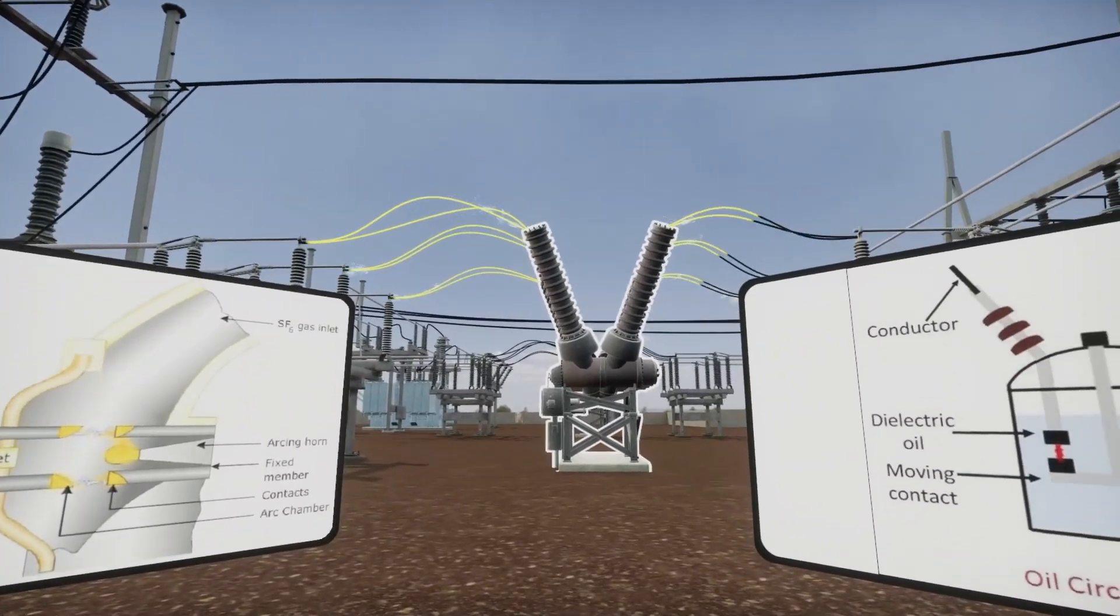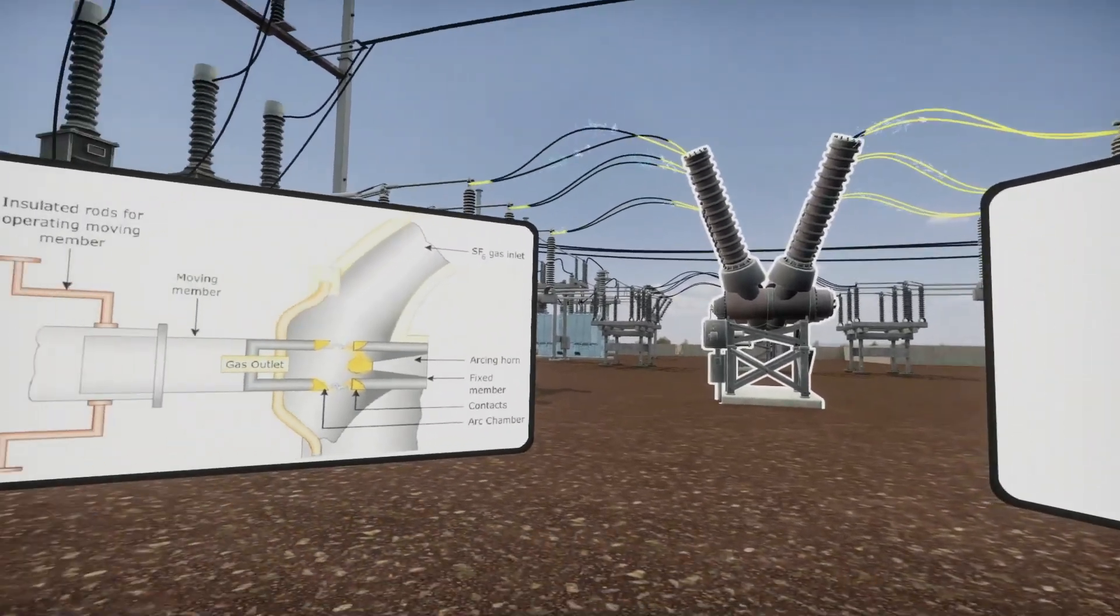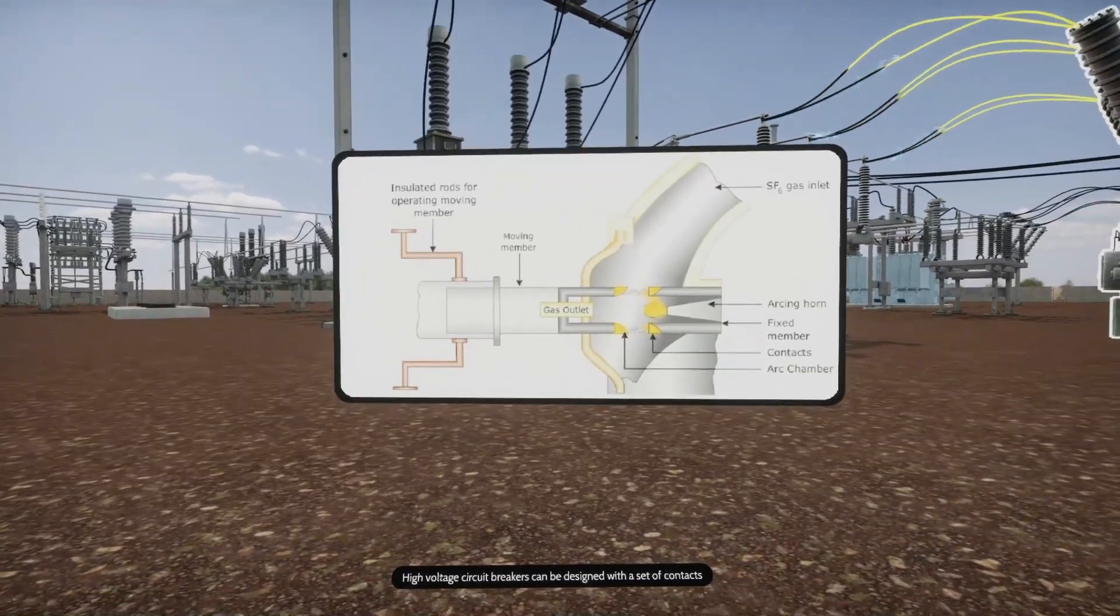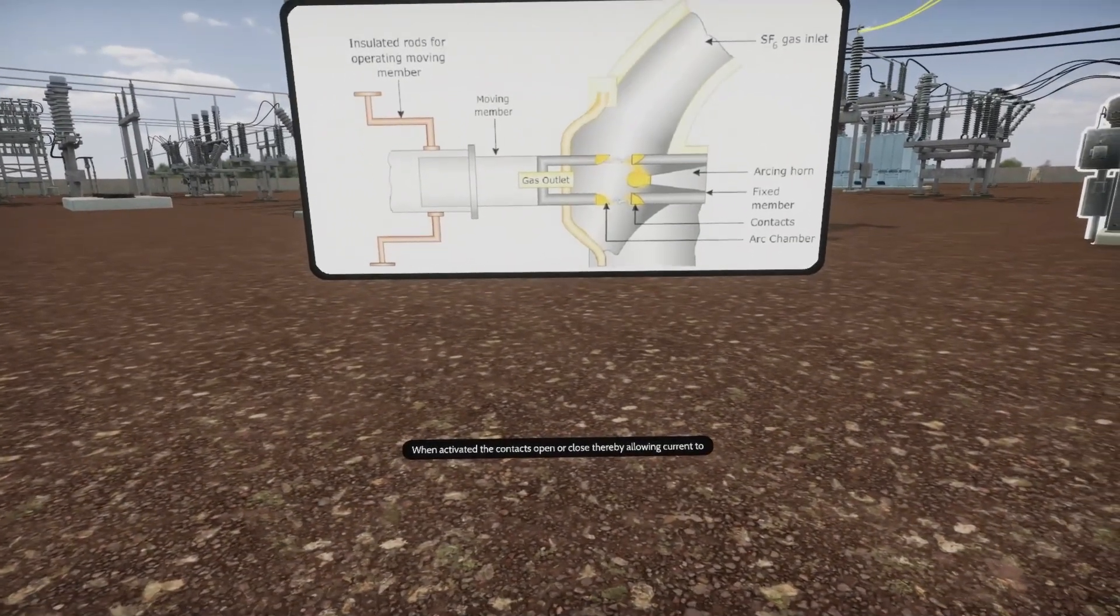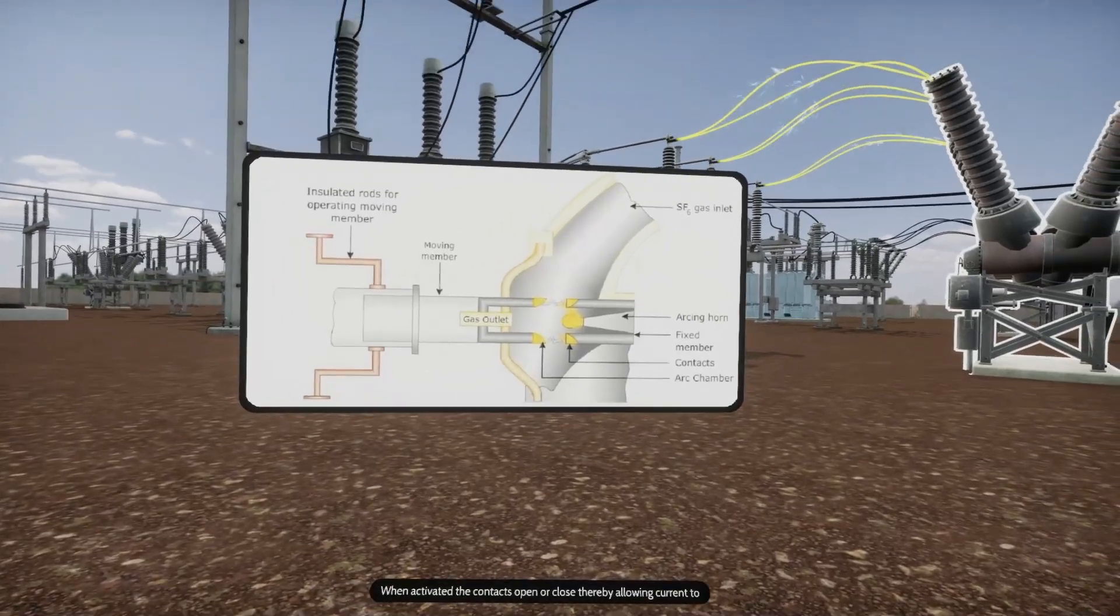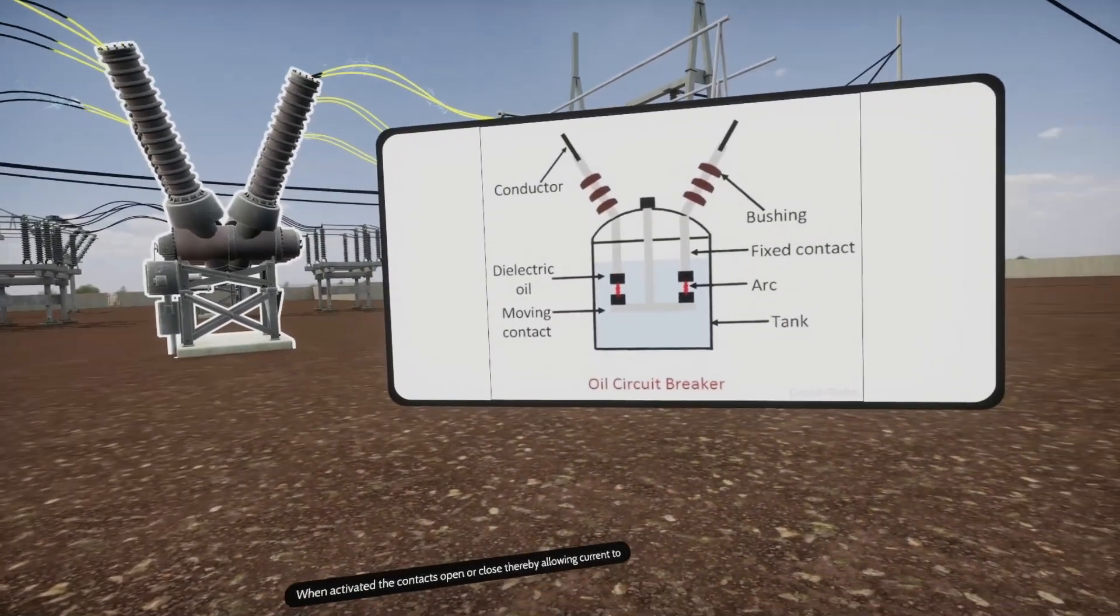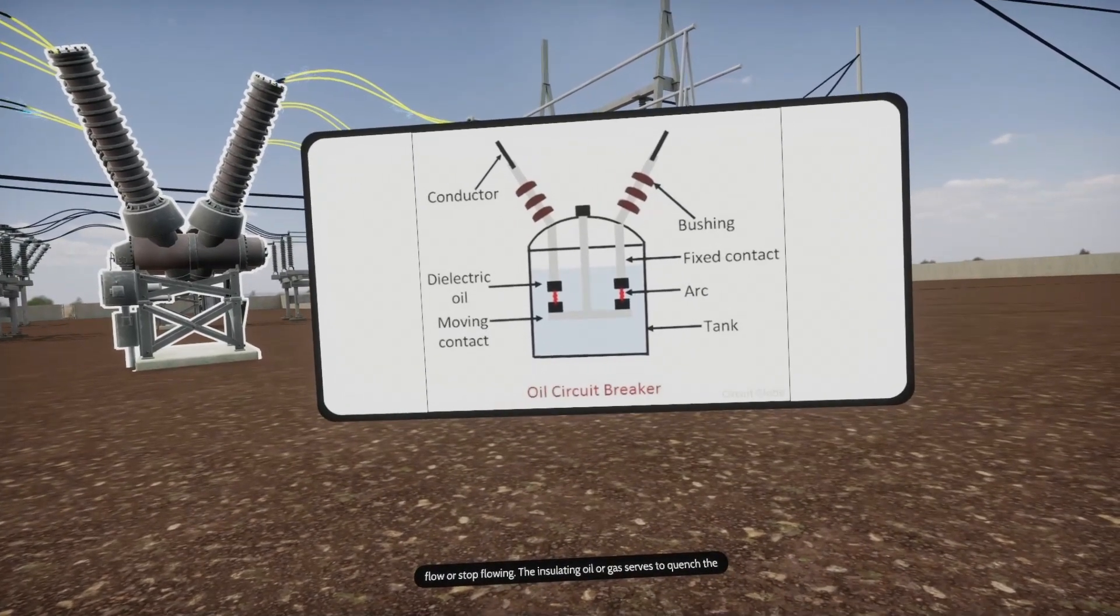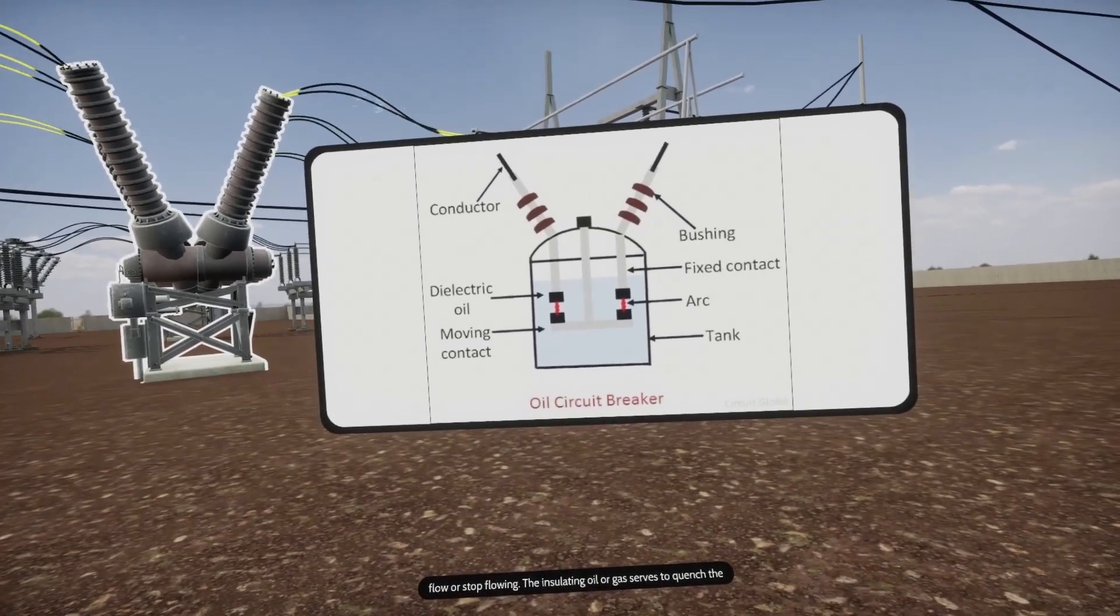High voltage circuit breakers can be designed with a set of contacts immersed in a tank filled with insulating oil or SF6 gas. When activated, the contacts open or close, thereby allowing current to flow or stop flowing. The insulating oil or gas serves to quench the arc generated by the opening of the contacts.